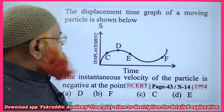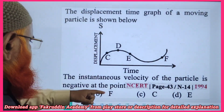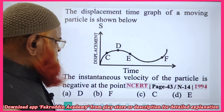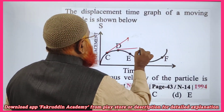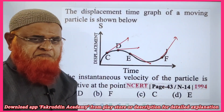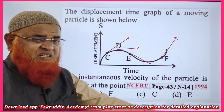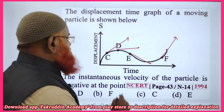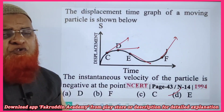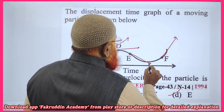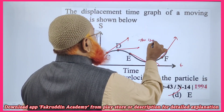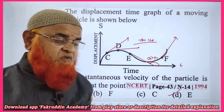In the next graph, the instantaneous velocity of the particle is negative, so we need to find the negative slope. Drawing tangents: here the slope is positive, here it is horizontal, here it is downwards, and here it is upwards again. Downwards means slope is negative — representing negative velocity. So the answer is the D position. At D, theta is greater than 90°, and tan of an angle greater than 90° is negative.